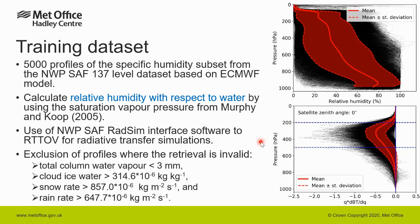We exclude a number of profiles where the simulations are invalid — more specifically when the total column water vapor is below 3 mm and there are high values of cloud ice water, snow rate, and rain rate. The profiles kept for the training of the retrieval are shown here by the black lines, while the red thick line presents the mean value of these profiles for relative humidity against pressure.